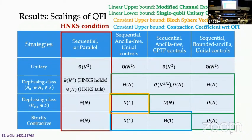Q: Is the unachievable Heisenberg limit related to the lack of a decoherence-free subspace? A: If you have a decoherence-free subspace, you can achieve the Heisenberg limit. Without one, in principle you could use error correction, but since with this restricted protocol you cannot do error correction, you cannot achieve the Heisenberg limit. So there is a relation, but it's not a necessary and sufficient condition.